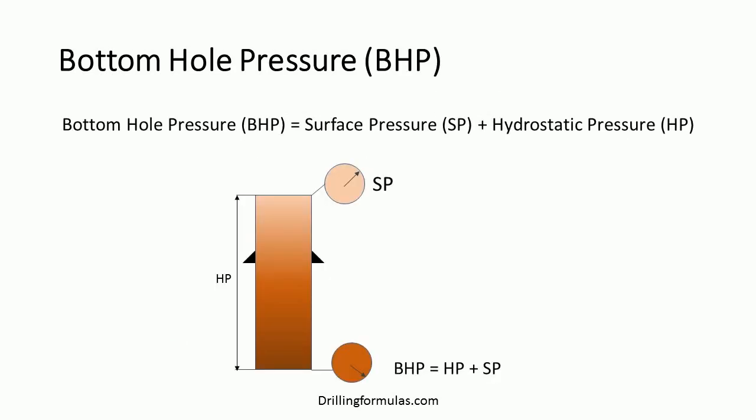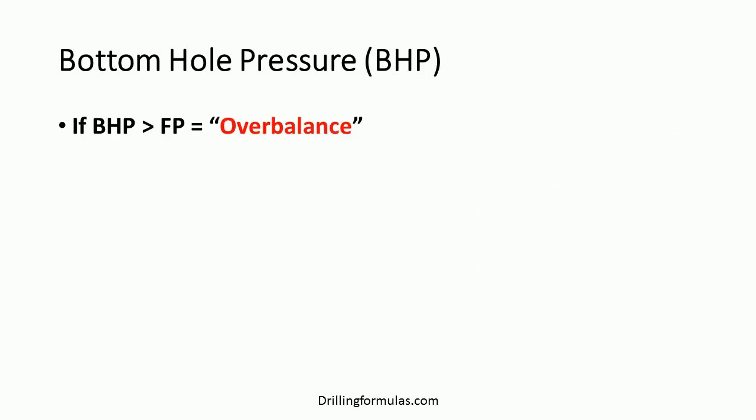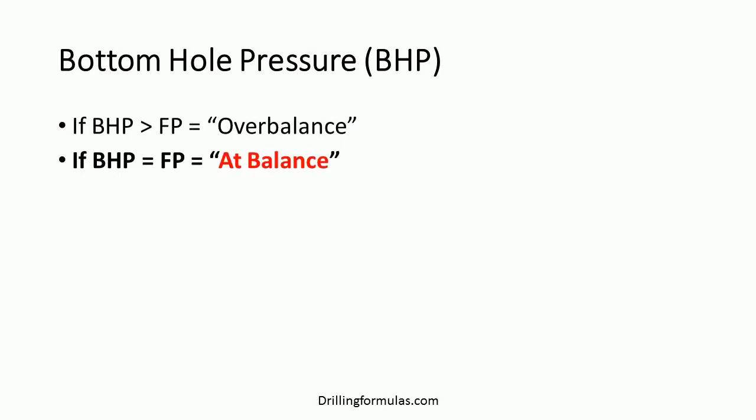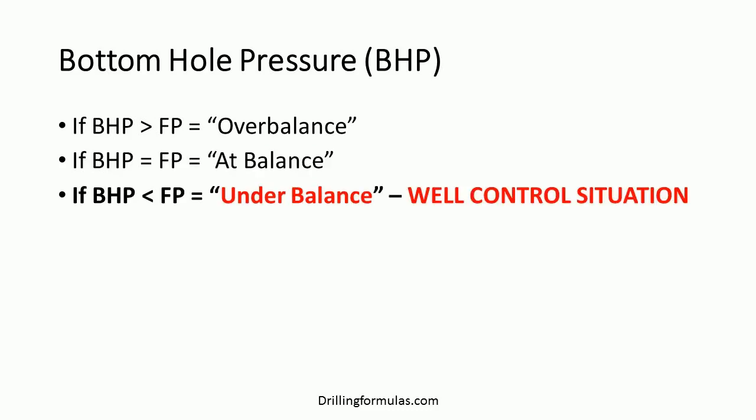Let's talk about bottom hole pressure. Bottom hole pressure is equal to surface pressure plus hydrostatic pressure. Bottom hole pressure should be greater than formation pressure. If bottom hole pressure is equal to formation pressure, this situation is called 'at balance.' If bottom hole pressure is less than formation pressure, this situation is called 'under balance,' and we will have a well control situation.